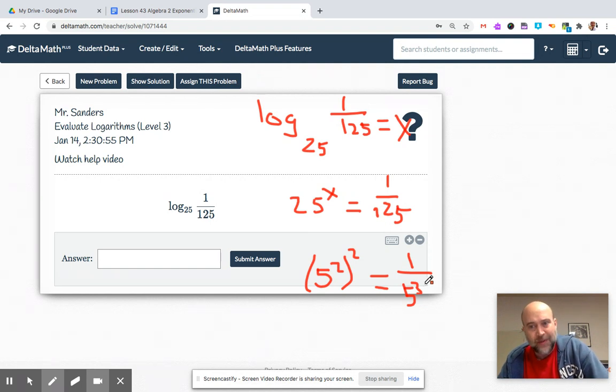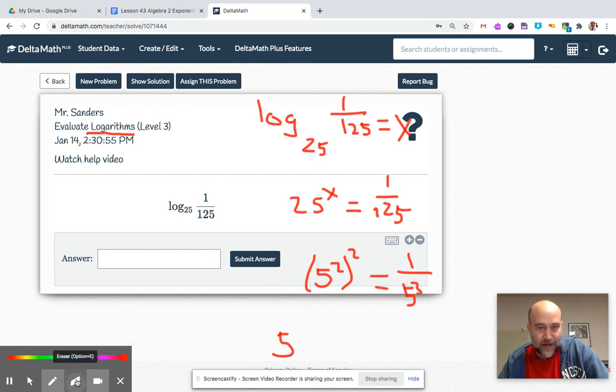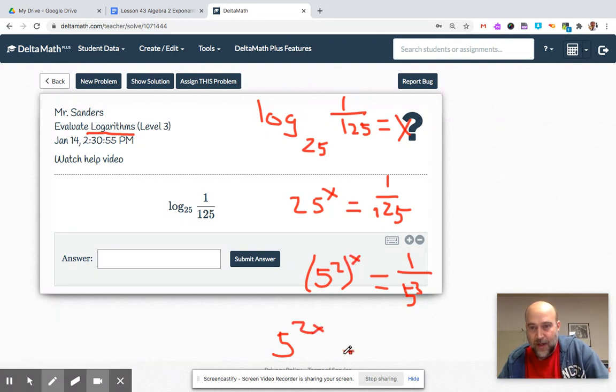It's a bunch of laws of exponents on these. Well, logarithms are exponential equations just rewritten, so it's a lot of rules of exponents here. So this now becomes 5 to the 2x.